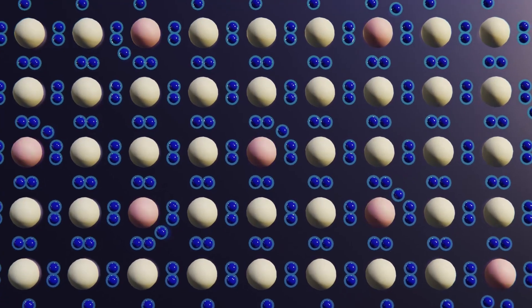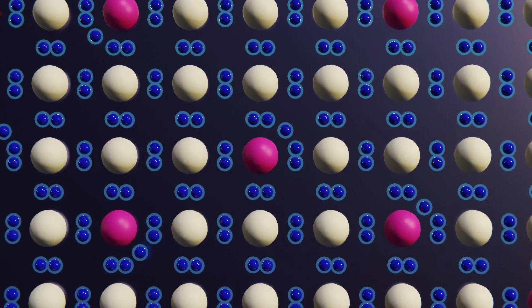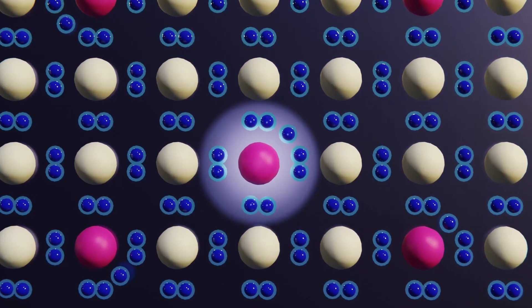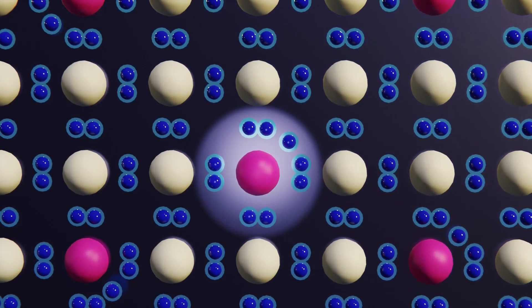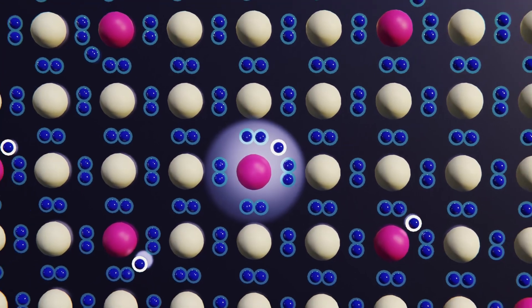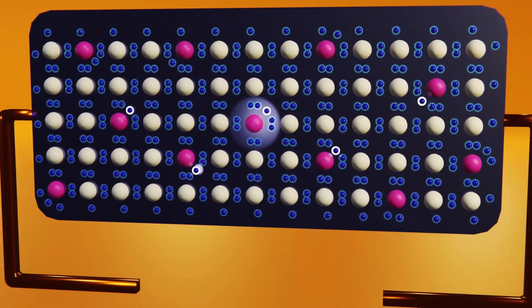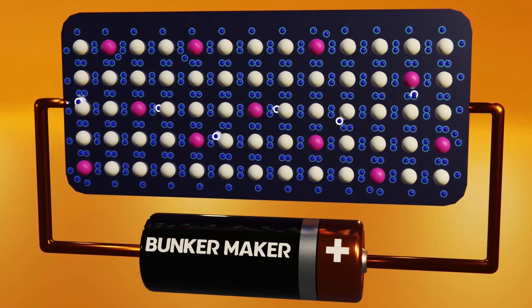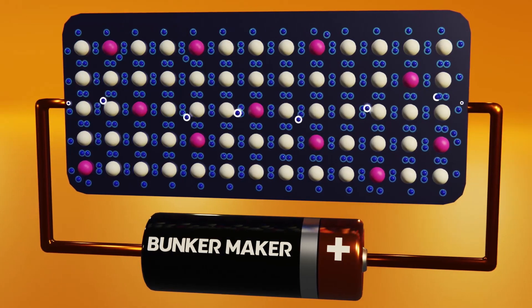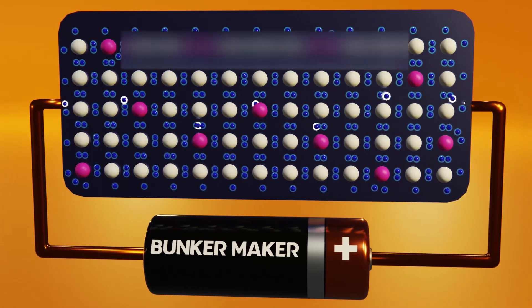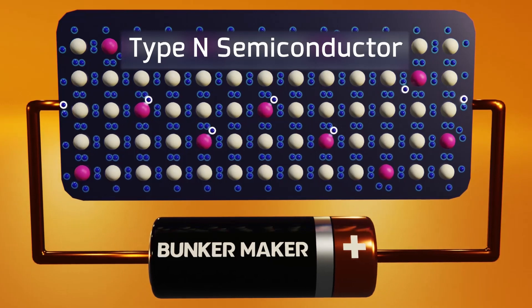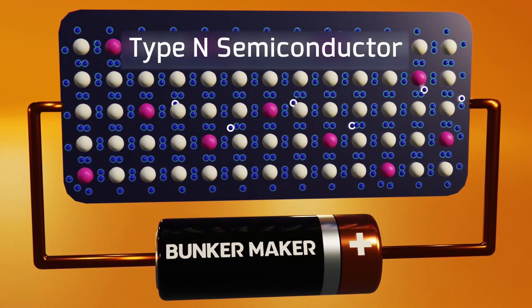If we add impurities that have five valence electrons instead of four, then we will have atoms with a total of nine electrons. Since eight was our magic number, we could say that one of the electrons will be left over or be freer from others, which will allow it to, when we connect it to a power source, move and act like a conductive material. This alloy is known as a type N semiconductor because it has surplus electrons, which, remember, have a negative charge.